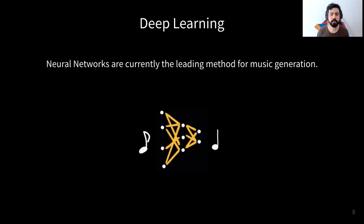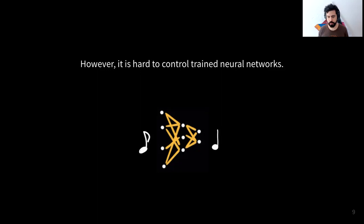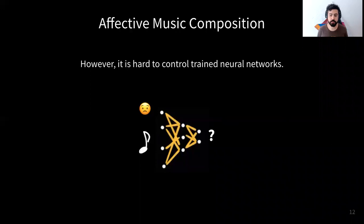It's kind of hard to control these methods if you want to control the features of the music. For example, imagine if you want to generate a happy song or a sad song — it's not quite obvious how you would change the parameters of this network to achieve that goal. And this is particularly important for the field of affective music composition.